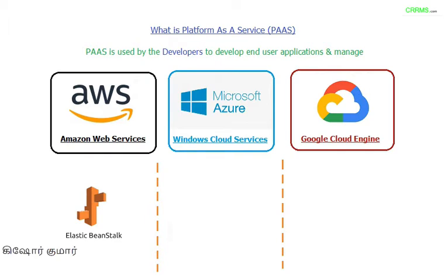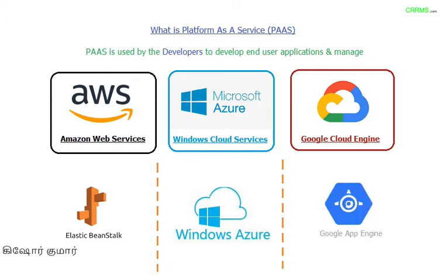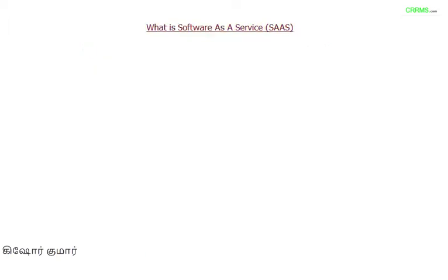PaaS is primarily used by developers to develop end-user applications and manage them. For AWS, PaaS offerings include Elastic Beanstalk and Lambda. For Microsoft, it's Windows Azure. For Google Cloud, it's Google App Engine.